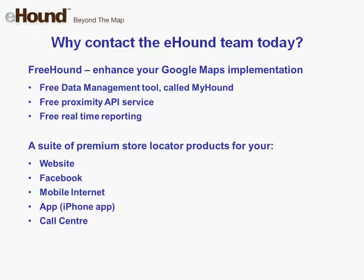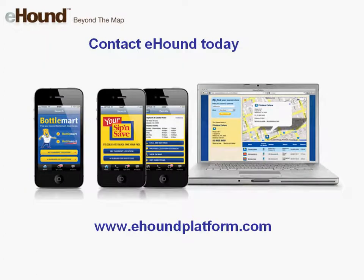Lastly, number four, eHound provides a suite of locator products which use the latest technology across multiple channels including Facebook, apps, mobile internet and call centre locators. So whatever your store locator needs are, contact the specialist by signing up for your free API account or contacting the eHound team today via our website eHoundplatform.com.